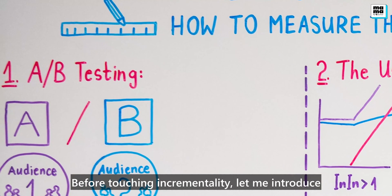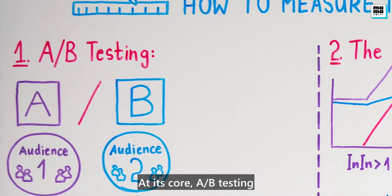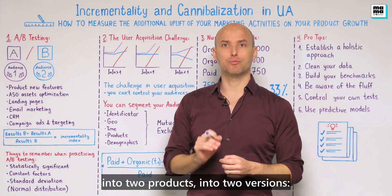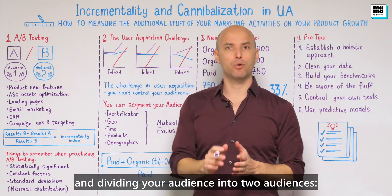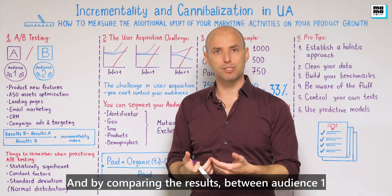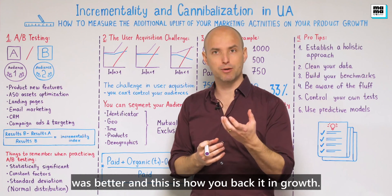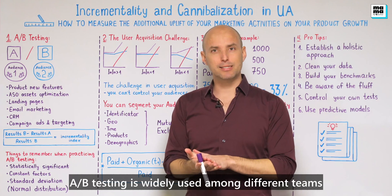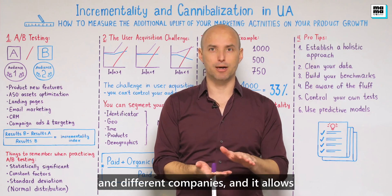Before touching incrementality, let me introduce you to a very powerful tool: A-B testing. At its core, A-B testing is dividing your product into two versions — version A and version B — and dividing your audience into two audiences. By comparing the results between audience 1 and audience 2, you can understand which version was better, and this is how you're impacting growth. A-B testing is widely used among different teams and different companies.